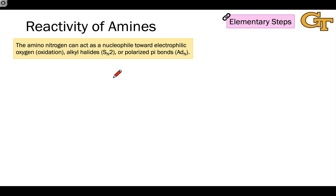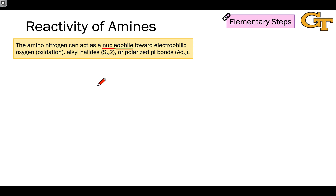Thinking back to our discussions of thiols and thioethers, the focus there was on the sulfur atom as a good nucleophile. The amino nitrogen in amines is similarly an excellent nucleophile, arguably even better than sulfur.